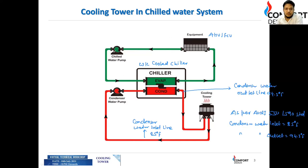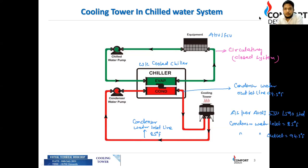Looking at this cycle, we find that the chilled water side is a closed system — water recirculates through that network. The condenser water side, where water comes in contact with the air in the cooling tower, is treated as an open system.